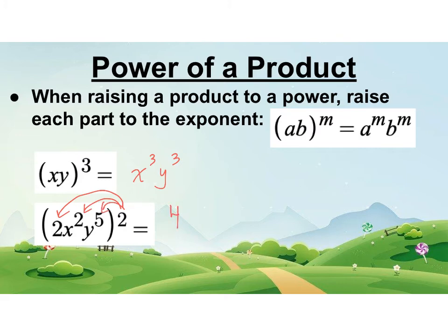So it becomes 2 squared which is 4. Power to a power we multiply. So 2 times 2 is 4, so x to the 4th. And then y to the 5th gets multiplied by the 2. So we have y to the 10.